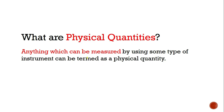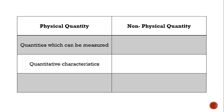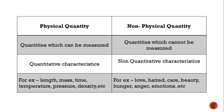Basically, any thing which we can measure quantitatively is a physical quantity. As I mentioned last time, all different objects in the universe have different types of properties, and among those there are certain properties which can be measured and certain others which cannot. So all those properties are either physical or non-physical quantities. Things like length, mass, time, and temperature are physical quantities which can be measured, while things like love, hatred, anger, and emotions cannot be measured and are non-physical.